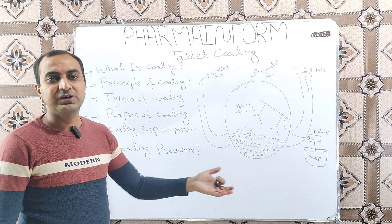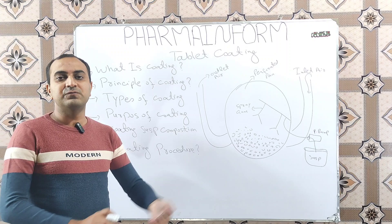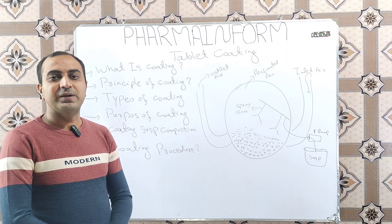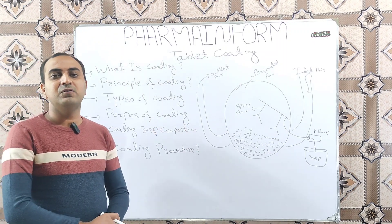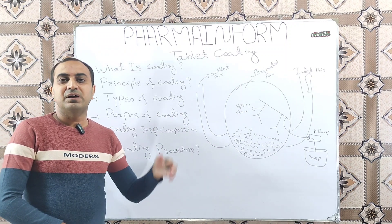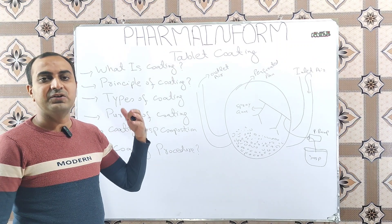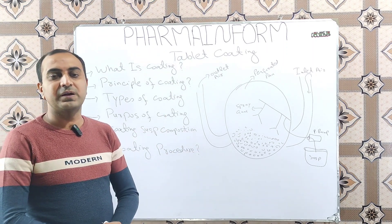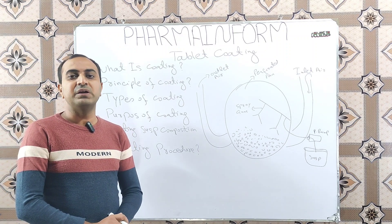We add plasticizers to our coating formulations. Plasticizers rearrange the structure of the polymer and help increase its film-forming capacity. We also add opacants such as titanium dioxide. Another optional ingredient is an anti-foaming agent like simethicone. This covers the basic composition of the tablet coating suspension.